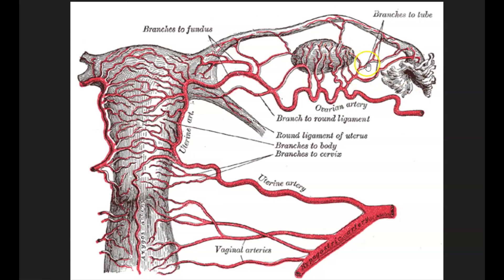The ovary has a dual blood supply from the ovarian and the uterine arteries. Given the dual blood supply, when there is torsion, venous flow is usually the first to go. So in an early acute torsion, you may have arterial blood supply or arterial color flow, but lack venous blood flow. This lack of venous outflow leads to congestion and edema of the ovary, which then leads to reduced arterial blood supply.